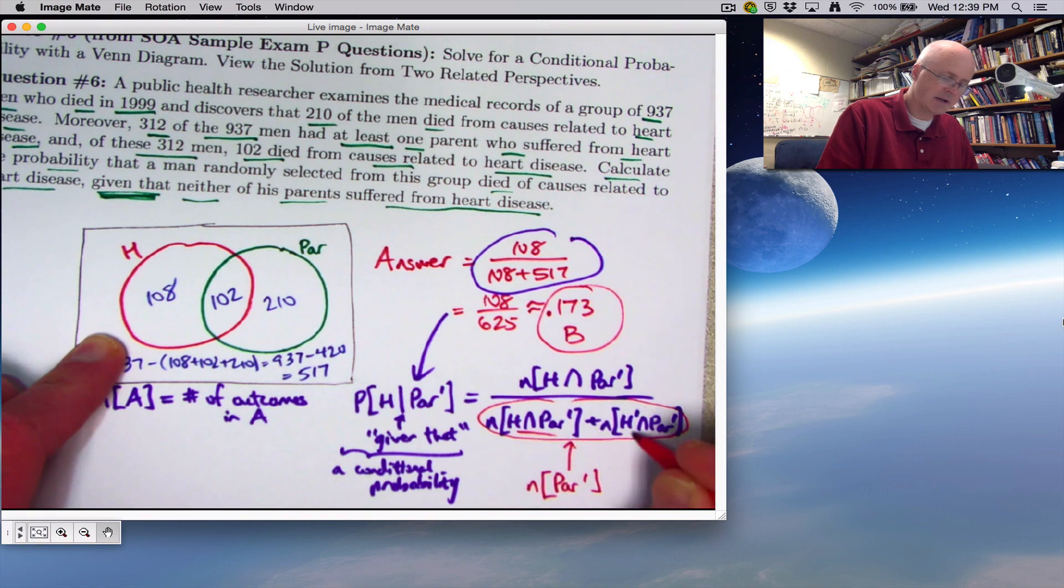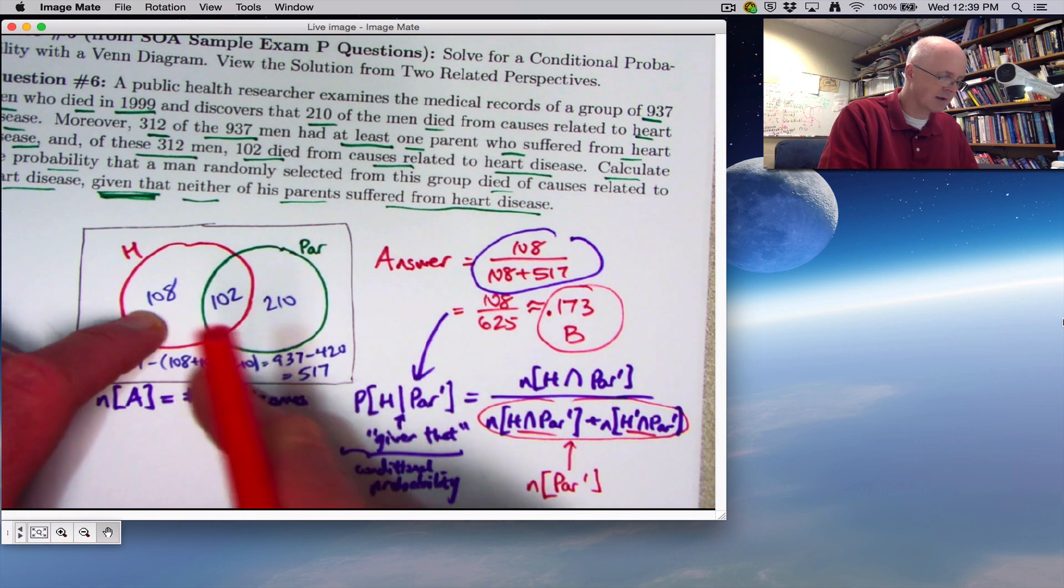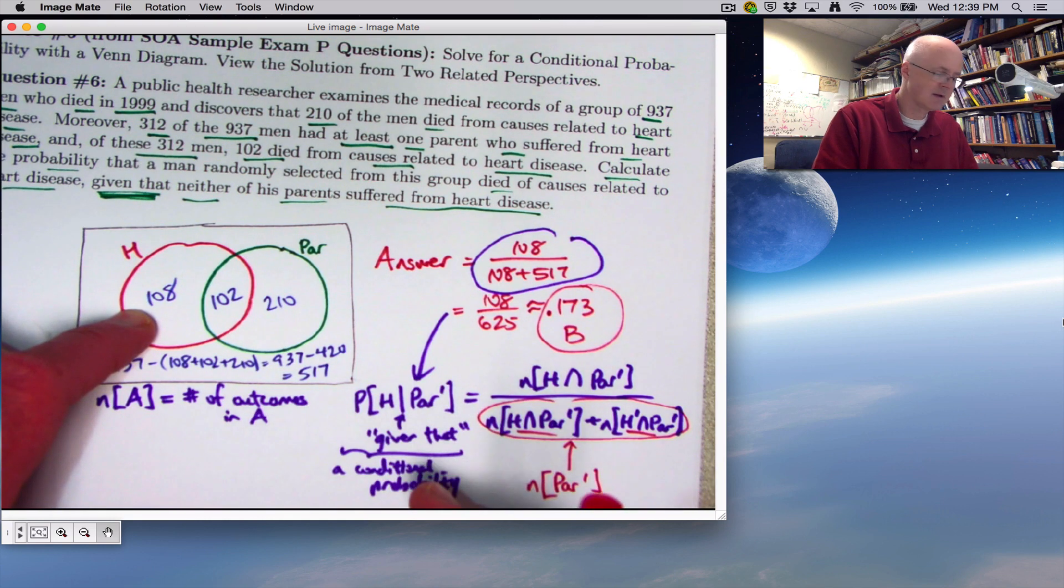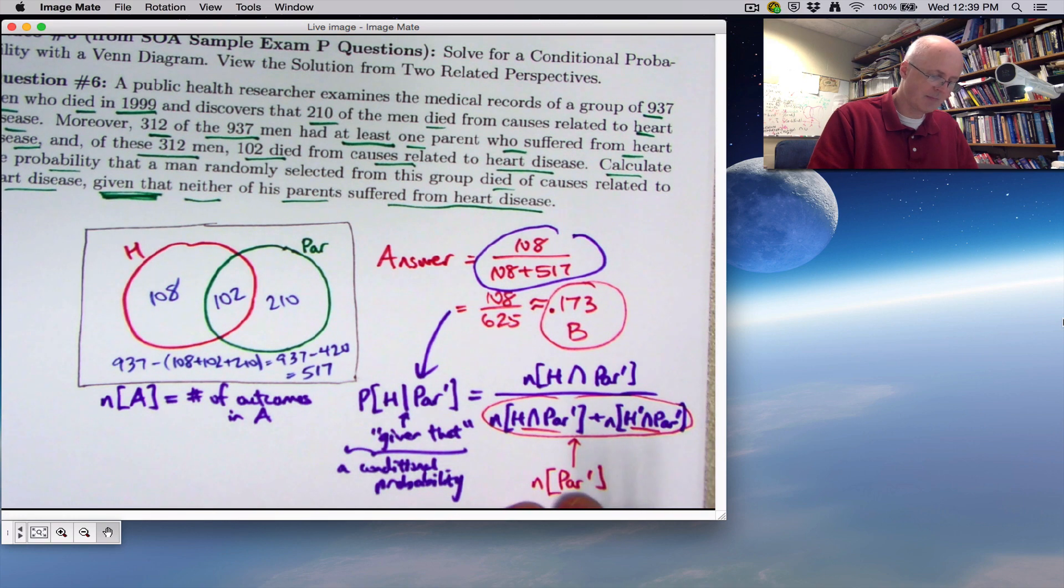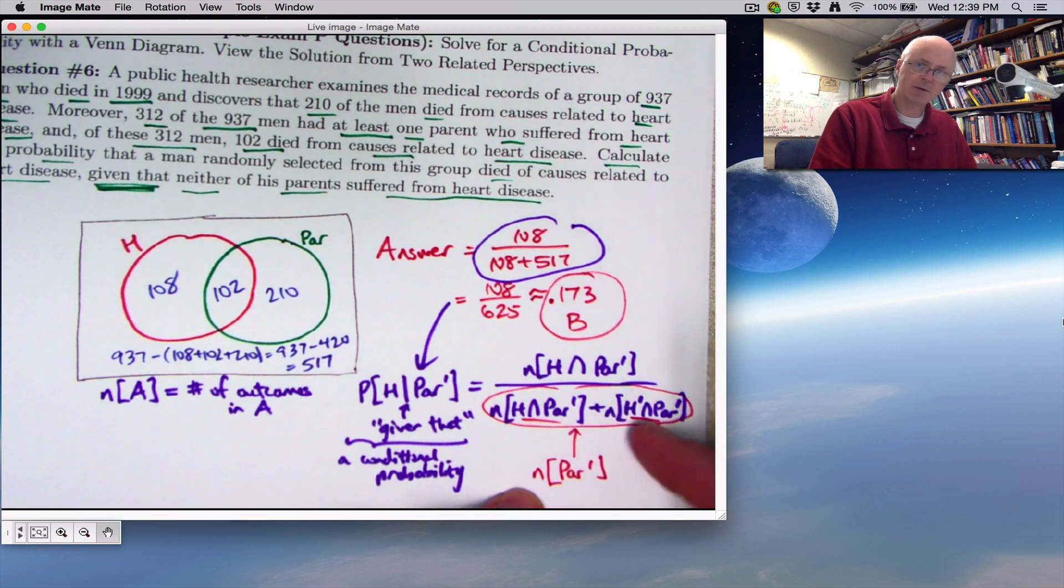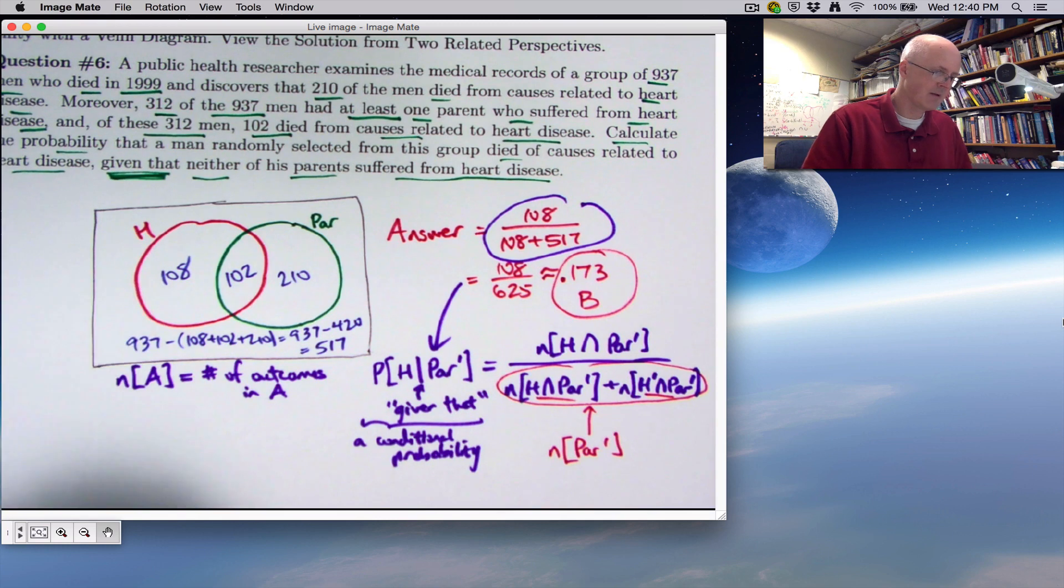These two events are disjoint, the 108 and the 517. There's no overlap between those mutually exclusive events. And their union is this set. So this number, just like its probability, could be represented as a sum of the number or probability from the pieces. So that's one way to write this.